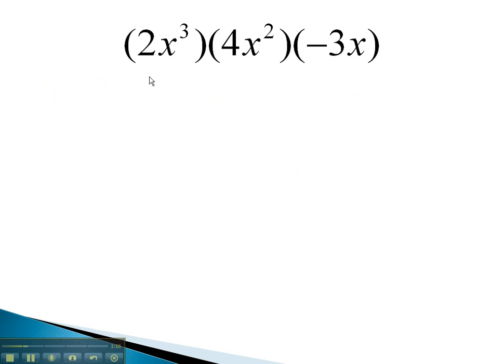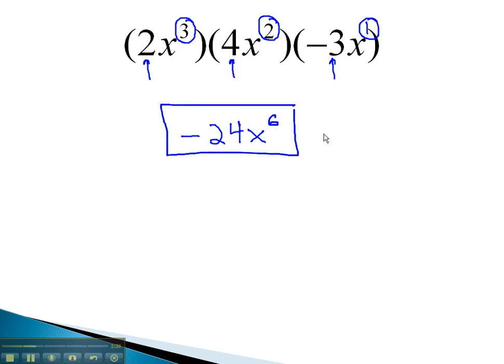First, we will multiply the numbers. 2 times 4 times negative 3 is negative 24. To find out the number of x's that are multiplied together, we will add the exponents. 3 plus 2 plus 1 is 6. This expression is negative 24 x to the 6th.